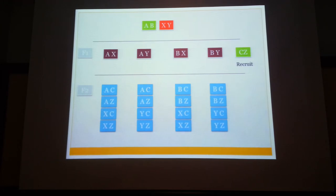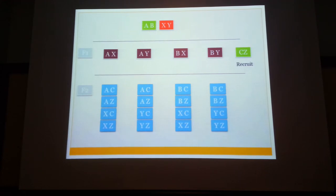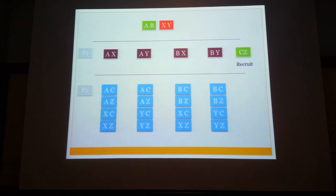A breeder has a different approach. He will breed using conventional methods, but will also undertake a process known as recruitment. The square shown in green with CZ represents a recruit. A recruit is basically wild type germplasm. So you cross CZ with the current F1 generation combination. When you have F2, the recruit crossed over with AX, AY, BX, and BY, you will have greater variation. That is the logic of breeding.